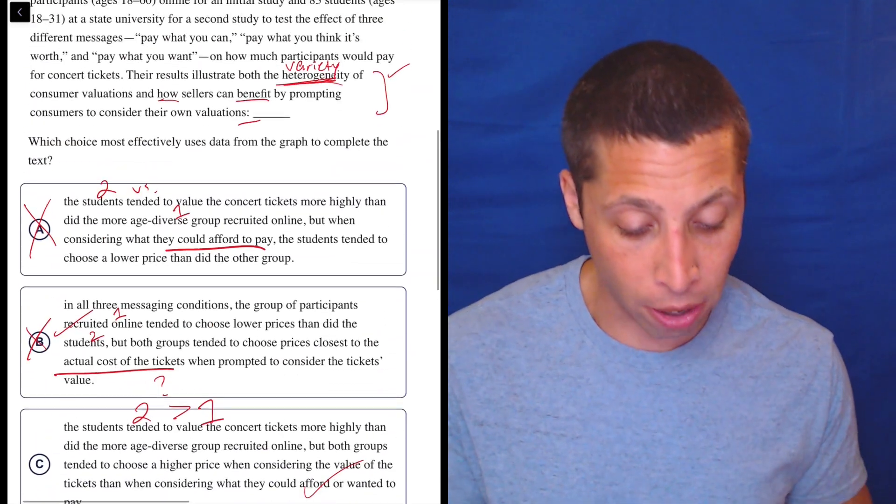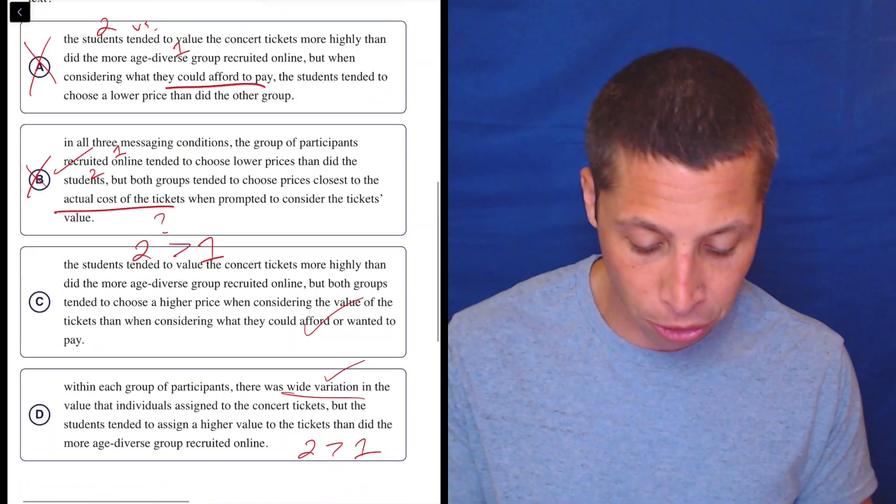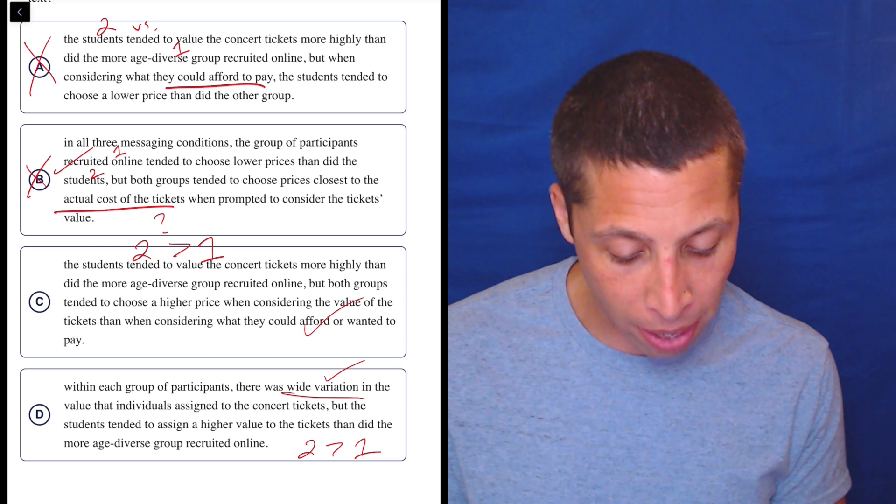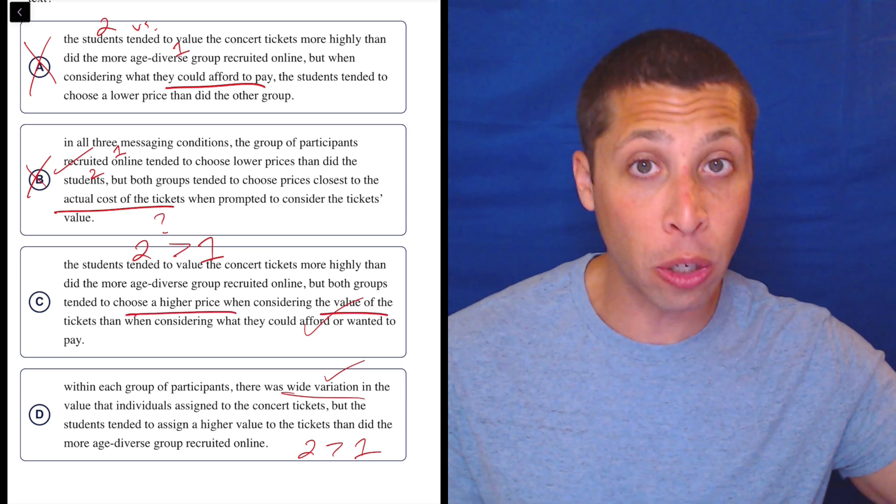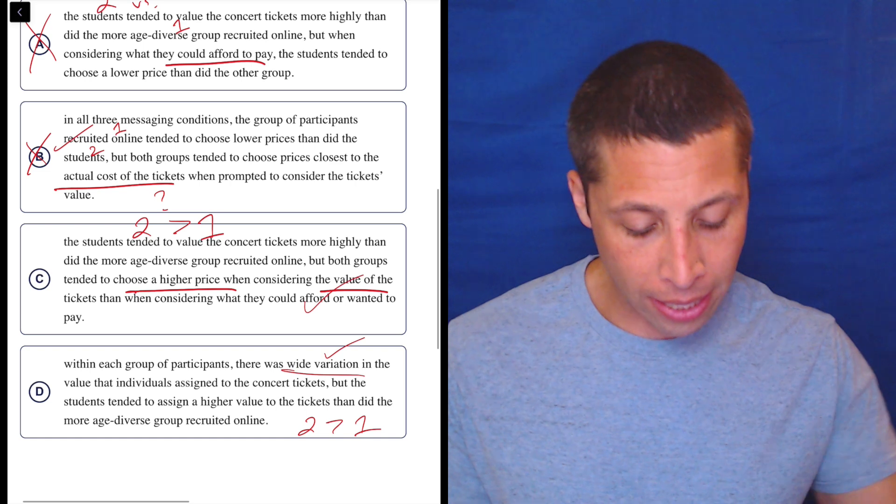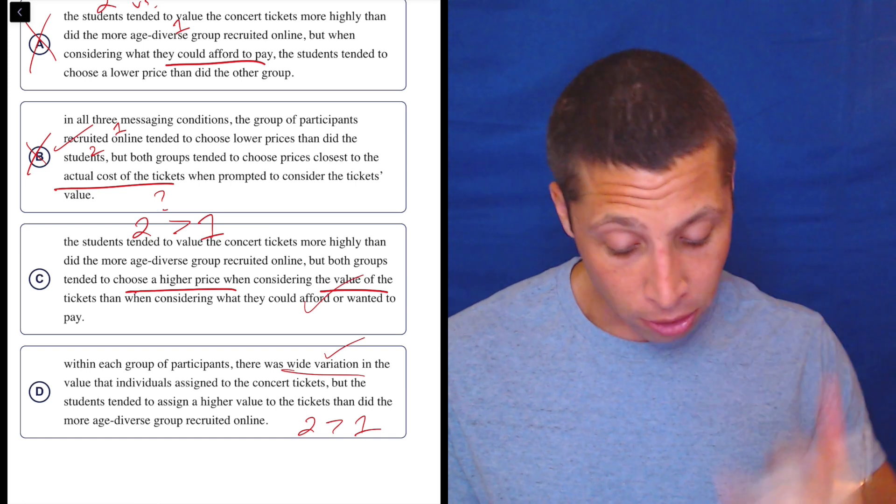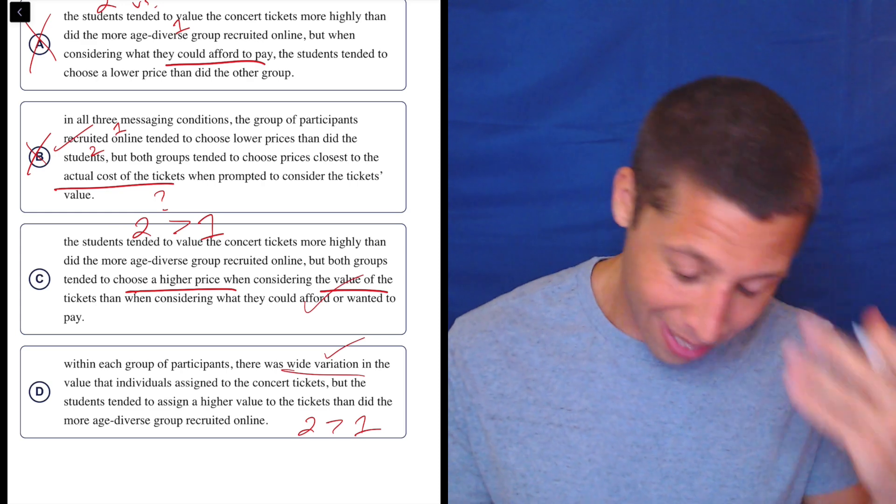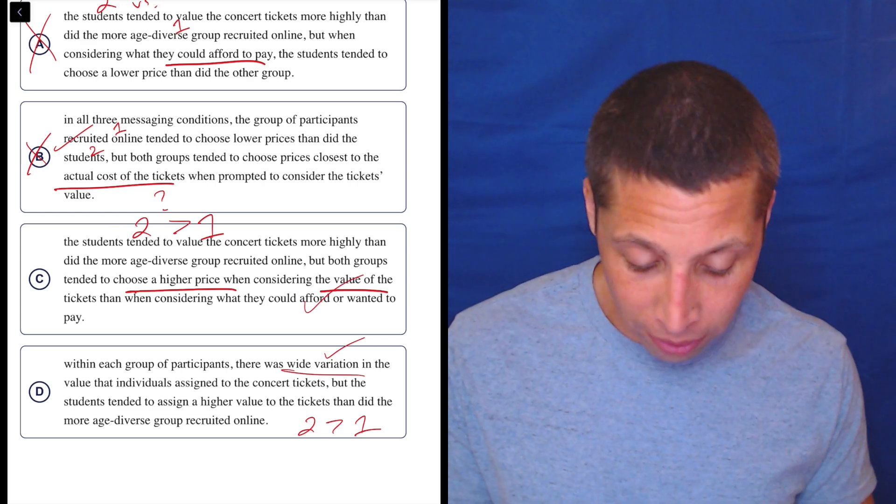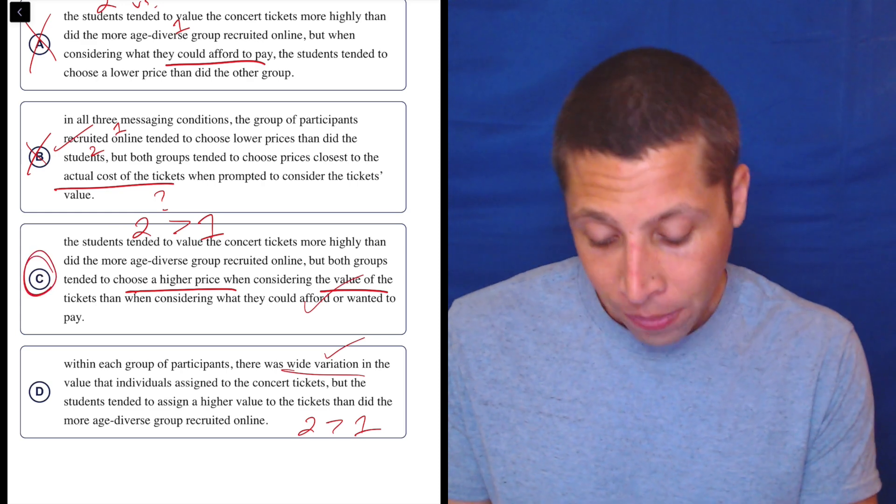And then the other part is there. The other part that the sellers are benefiting because we're talking about a higher price when we think about the value. That seems like it would be good for the seller. I don't think anything in D is talking about the seller. The students ended up to assign a higher value to the tickets. Again, maybe that's about the seller. There was wide variation. Yeah. Now, the answer is C.